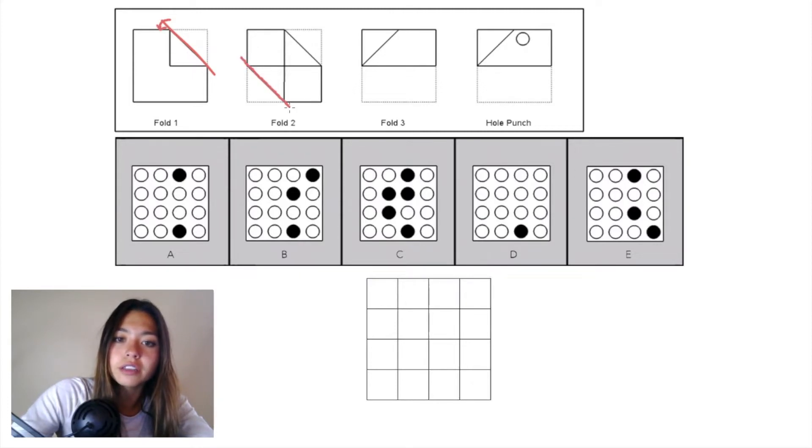In fold two, we have another diagonal plane and we're folding that bottom left triangle up into this triangle right here.